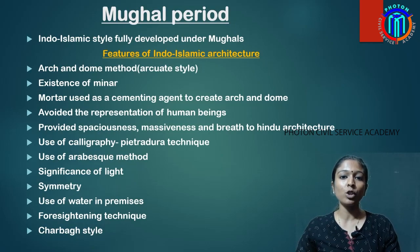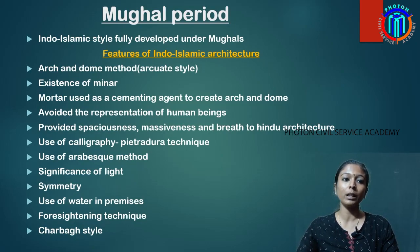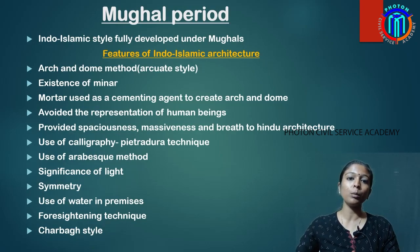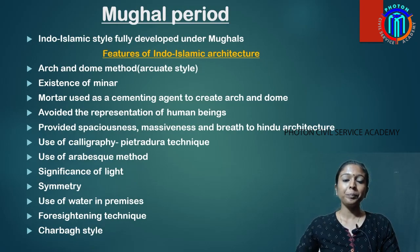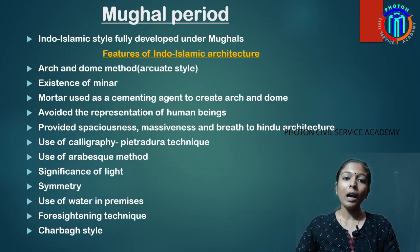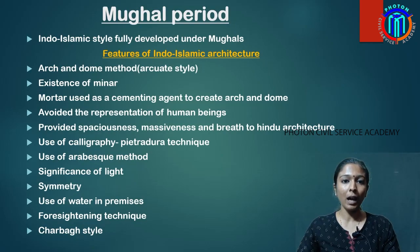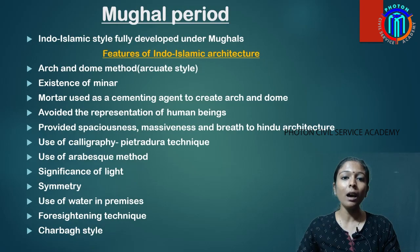Now, what are the features of Indo-Islamic architecture? In ancient architecture, we used to open a gateway using two vertical pillars and a cross beam — this is called the Trabeate style. But in the Mughal period, arches and domes were introduced. This is called the Arcuate style. The Qutb Minar is a constant example seen in Mughal buildings.